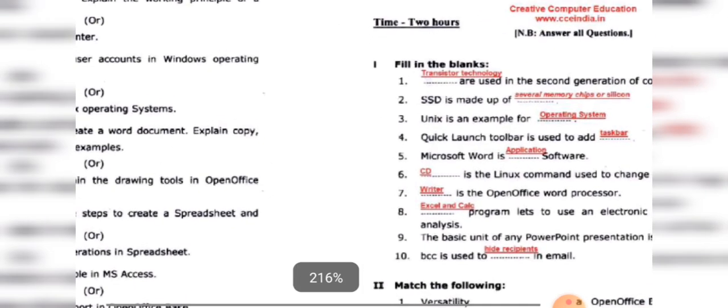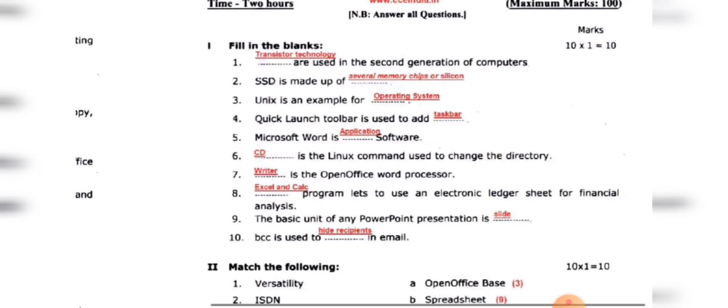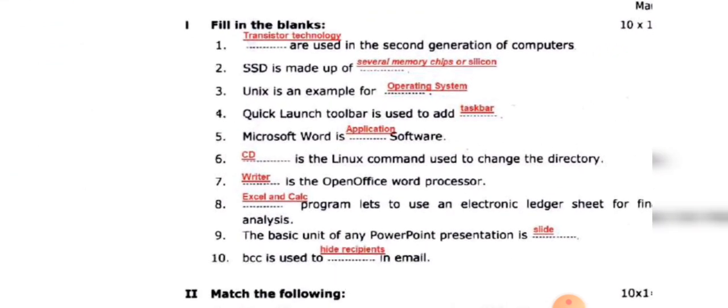The first question is about transistor technology. The first generation used the COI (vacuum tubes). The second generation is the transistor. The third generation used the IC (Integrated Circuit).